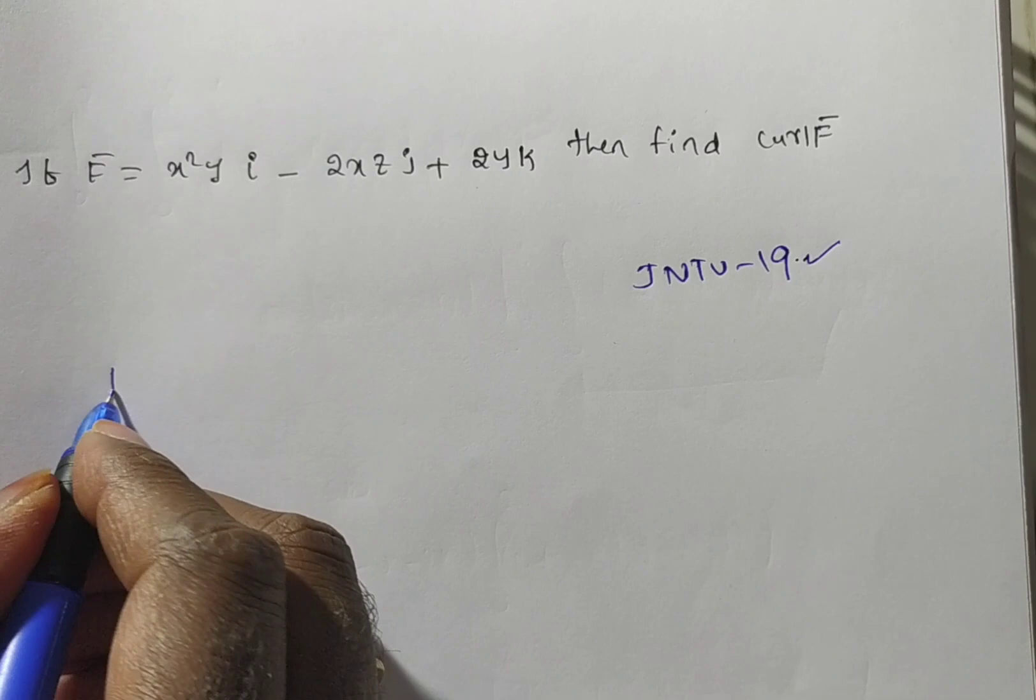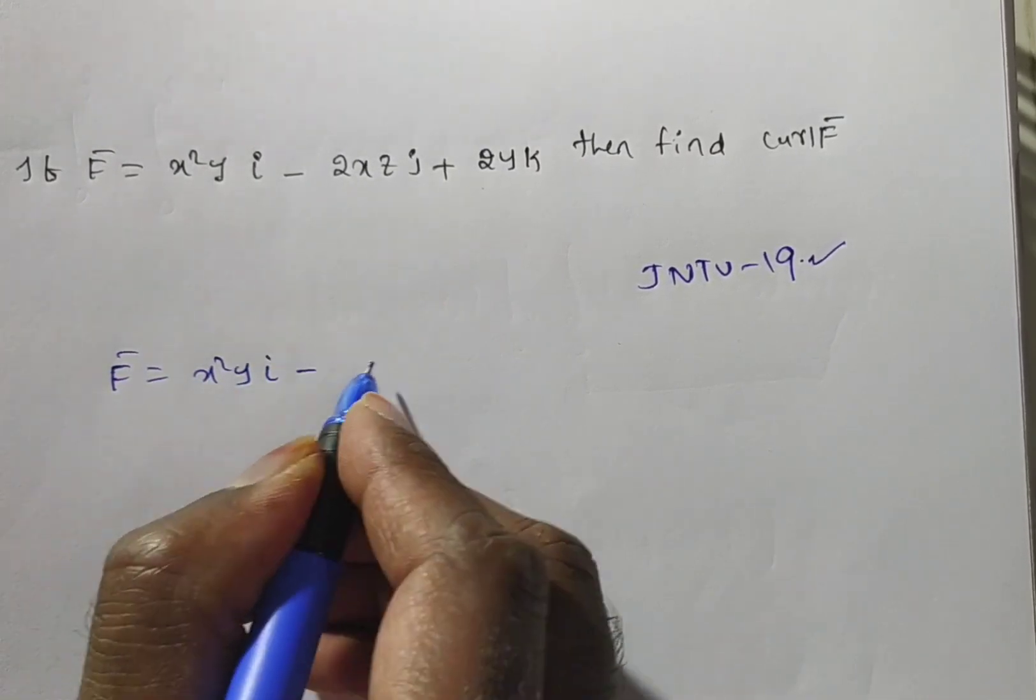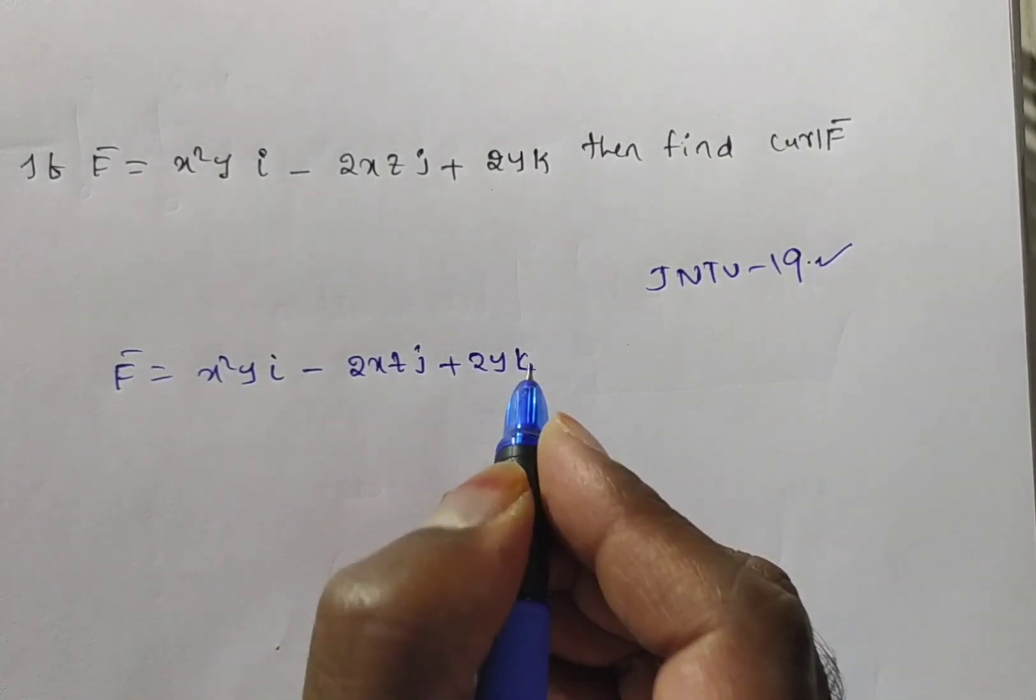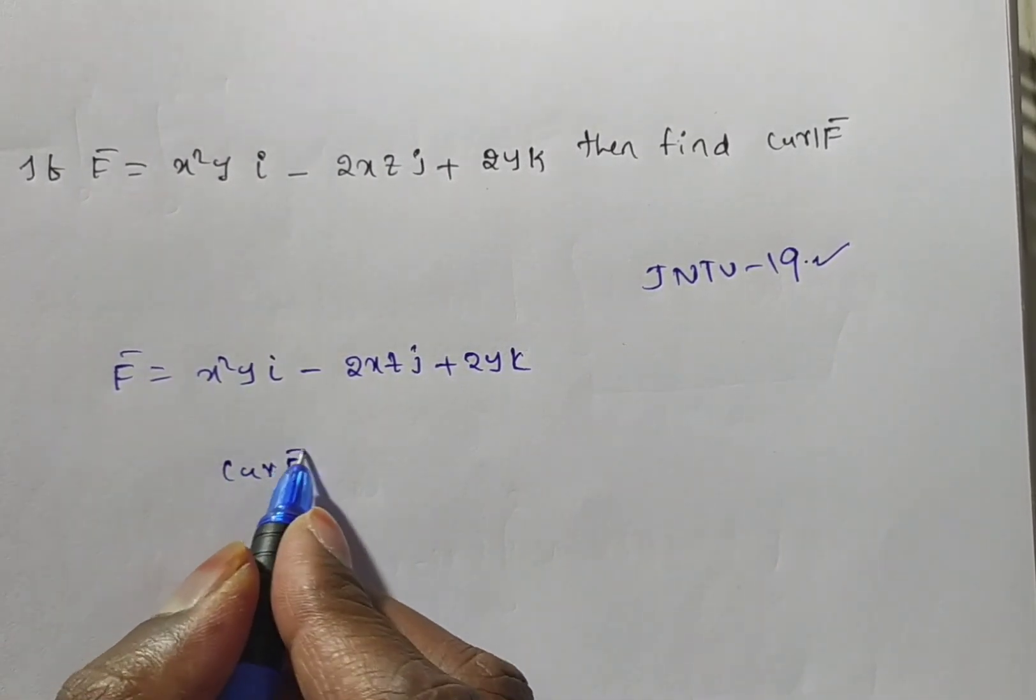Now the given F bar is equal to x square y i minus 2xz j plus 2y k. Now what you need to find, curl F bar.